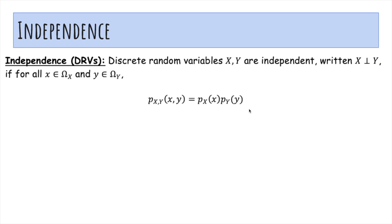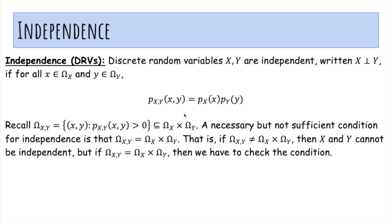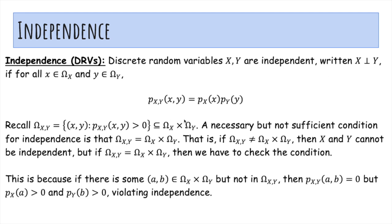So now, independence. We'll say discrete random variables X and Y are independent if for every x in the range of X and y in the range of Y, this is true. And we've seen this before. You can read all this on your own time.